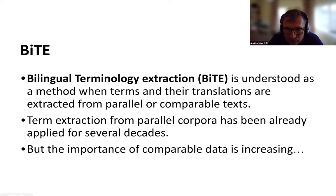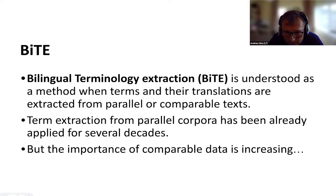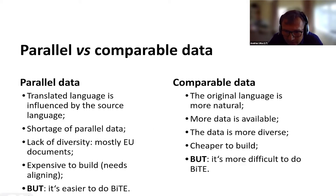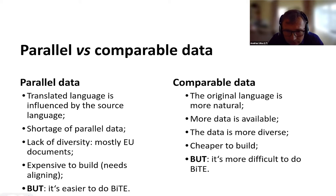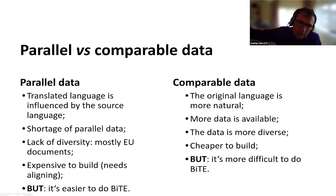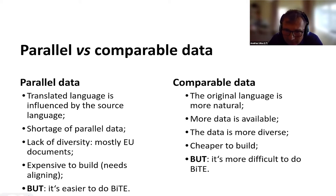BITE — bilingual terminology extraction — is a method where terms and their translations are extracted from parallel or comparable text. From parallel corpora this term extraction has been applied for several decades, but the importance of comparable data is increasing. For parallel data, it is usually influenced by the source language, there is usually a shortage of parallel data — for example we only have EU documents — and it is expensive to build because you need alignment. Comparable data is more natural, there is more data available, it is cheaper to build, but it is more difficult to do BITE on. For parallel data it is easier to do BITE.